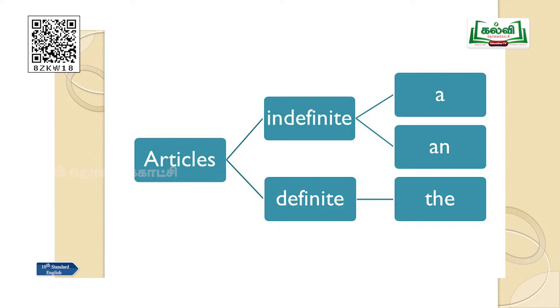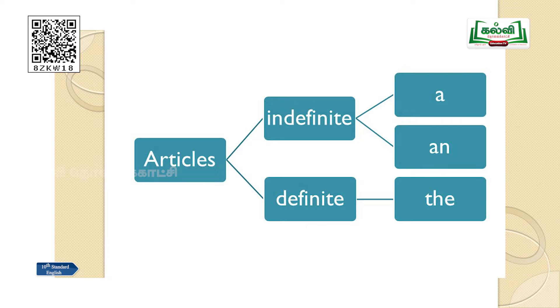Articles are divided into indefinite articles and definite articles. Indefinite articles are 'a' and 'an'; the definite article is 'the'. Indefinite articles talk about things, places, or persons in general. The definite article talks about a particular or specific person, place, or thing. That is the difference between indefinite and definite articles.